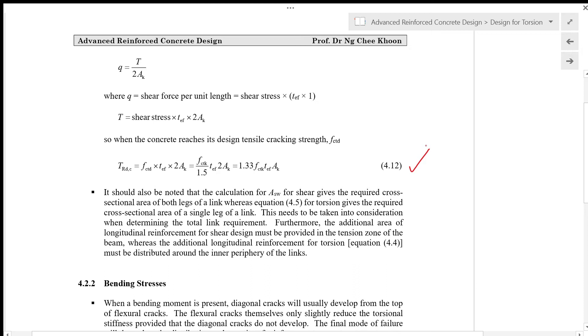It should also be noted that the calculation for ASW for shear gives the required cross sectional area of both legs of a link, whereas equation 4.5 for torsion gives the required cross sectional area of a single leg of a link. This needs to be taken into consideration when determining the total link requirement.